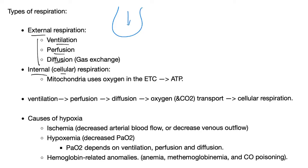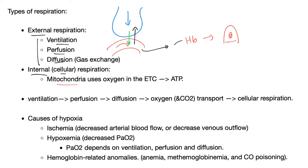Ventilation is to get air into the lung. Perfusion is to get blood into the vessels near the alveoli. Diffusion is for oxygen to go in and carbon dioxide to go out. Once oxygen is in the blood, it jumps on red blood cells, then hemoglobin, then goes to the cell where cellular respiration occurs in the mitochondria — using oxygen to produce ATP.